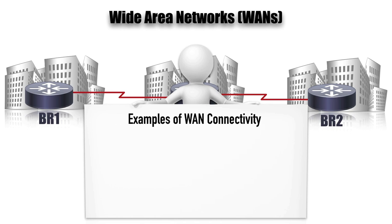Some examples include leased lines. Back in the day, it was commonplace to have a T1 between offices, or an E1 in some other countries. These days it's really easy to get an internet connection in a small office or home office — maybe we've got a cable modem.